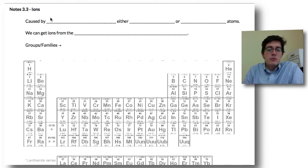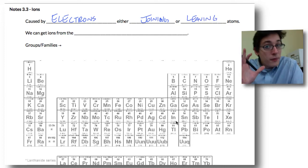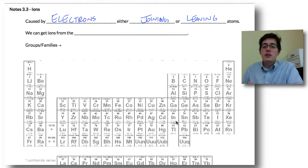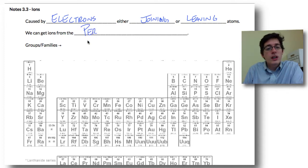Ions are caused by electrons - remember we're focusing on electrons for this chapter. These are caused by electrons either joining or leaving atoms. Valence electrons can move around; they will either join new atoms or leave their parent atom. We can get ions from the periodic table and determine which atoms will become what kind of ion.